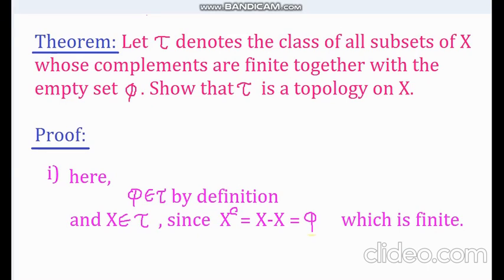First, we will show that tau satisfies axiom number 1. That is both the empty set phi and the whole set x belong to tau. Now note that the empty set phi belongs to tau by definition of co-finite topology. That is, it is given in the statement of the theorem. So now we only need to show that x belongs to tau.